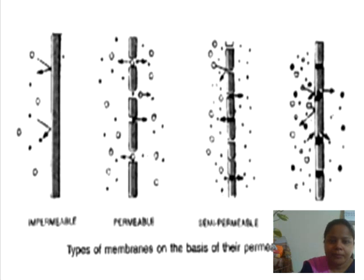A permeable membrane allows both the solute and solvent to move across the membrane. The semipermeable membrane allows only the solvent to move across it but restricts solute from passing through.